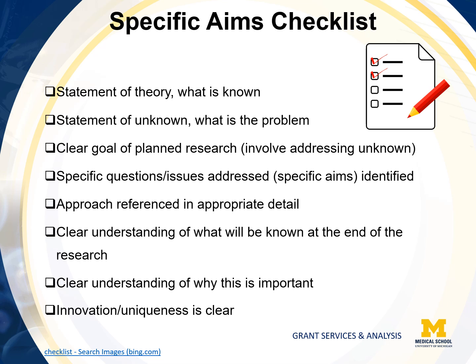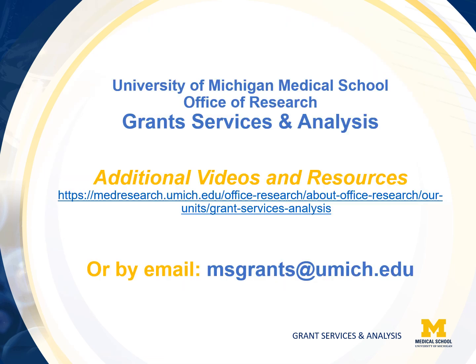To wrap up, let us go over your specific aims checklist. Have you stated what is known and what is the problem? Do you have a clear goal of your planned research? Are your specific questions and issues addressed? Is your approach referenced in appropriate detail? Have you stated what will be known at the end of the research and why it's important? And is this clearly understood? Also, make sure that your innovation and uniqueness is clear. Thank you for joining the University of Michigan Medical School Office of Research Faculty Education Series on writing your NIH specific aims. For additional tools and resources, please check our website under the training and resources section or by reaching out through email at msgrants@umich.edu.